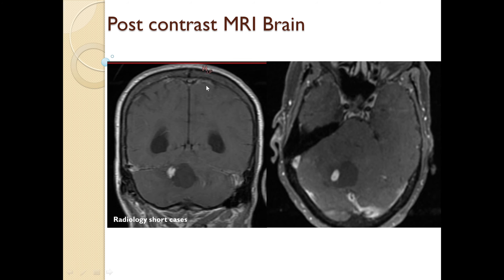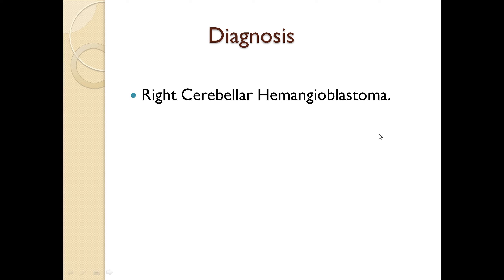On post-contrast coronal and axial T1-weighted images, the cystic lesion is non-enhancing and the peripheral mural nodule shows homogenous enhancement with a serpentine flow void at the periphery. Again on the axial T1 post-contrast images, we can see the homogenous enhancement of the mural nodule. Based on these findings, the diagnosis of right cerebellar hemangioblastoma was considered and was later confirmed on surgery.